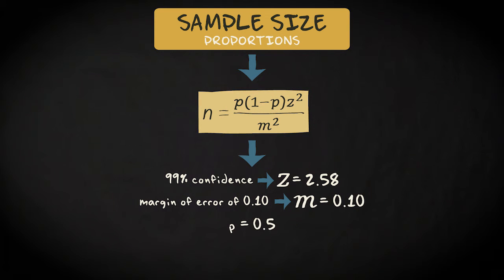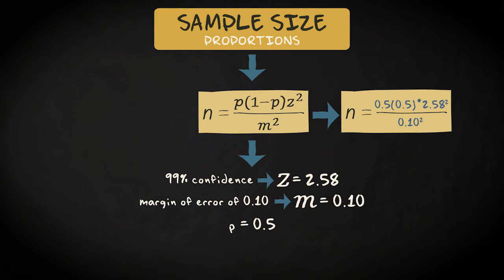We can now complete the formula: 0.5 times 0.5 times 2.58 squared divided by 0.10 squared. That equals 166.41, which makes 167 respondents.